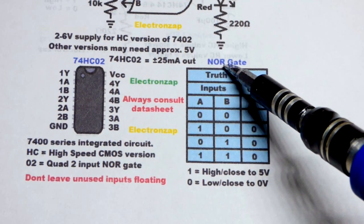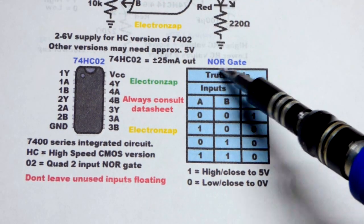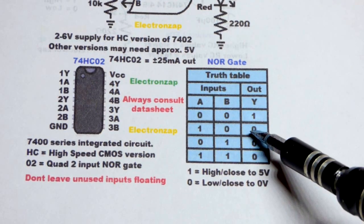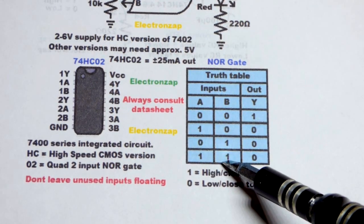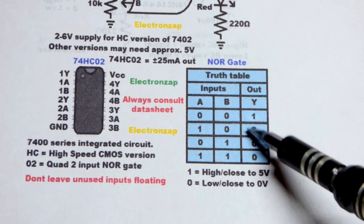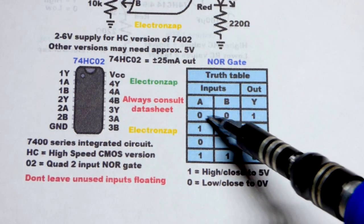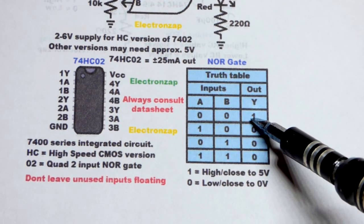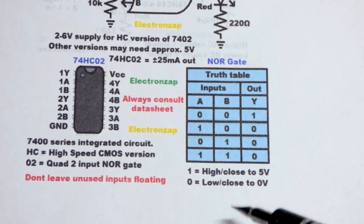But since this is a NOR gate, that means not OR gate, or inverted OR gate, the output is inverted. And so instead of the output being high when one or more input is high, it's low. And if all of the inputs are low, instead of being low, like the OR gate, the NOR gate is high, right there. So that's the rules.